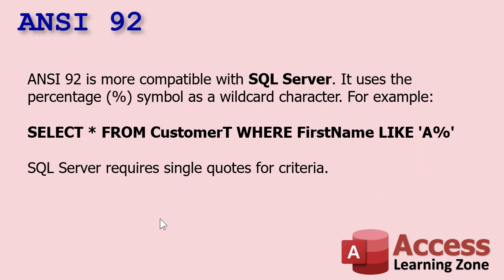ANSI 92 is more compatible with SQL Server. It uses a percent symbol for a wildcard character and an underscore for a single wildcard character. You have to use single quotes for your criteria, so the same query uses a percent sign instead of an asterisk. Why they're different is a long story — not going into it. I wish Microsoft would unify them.